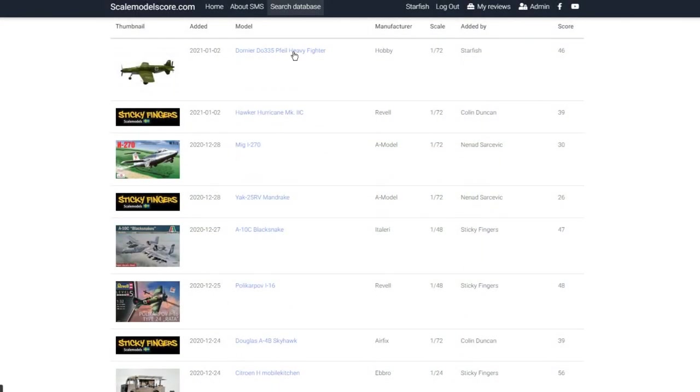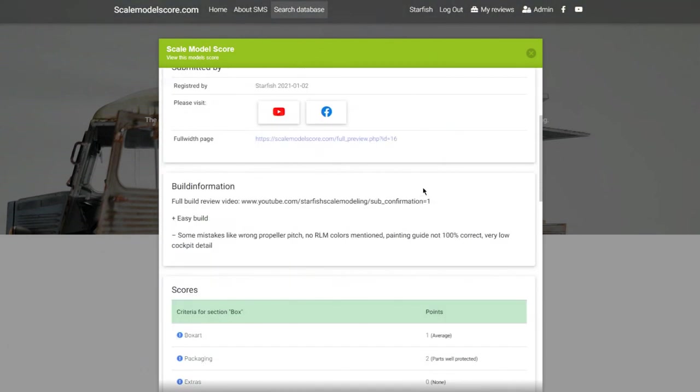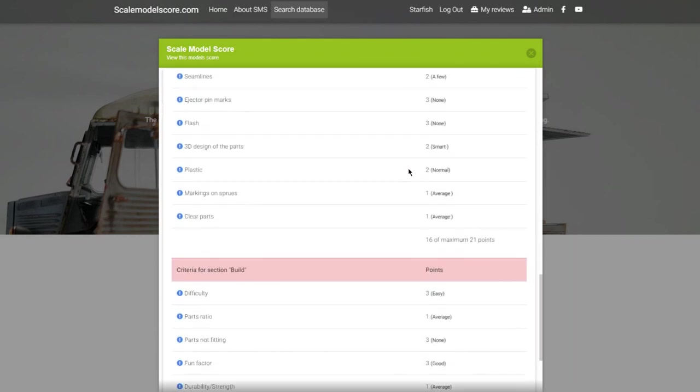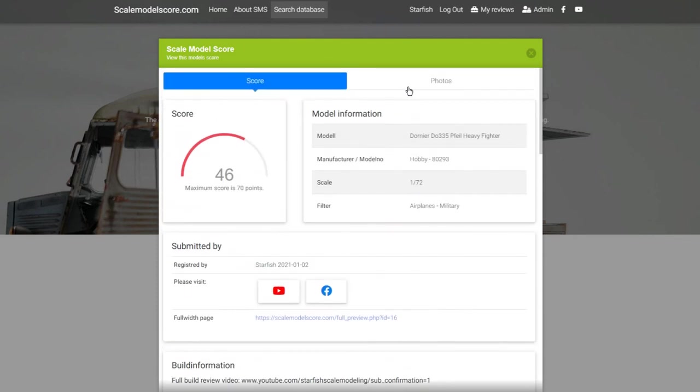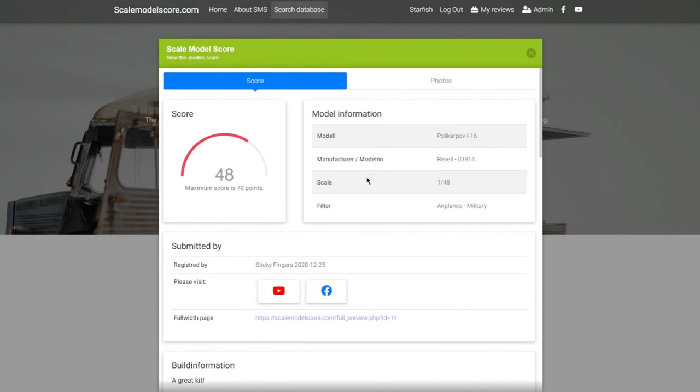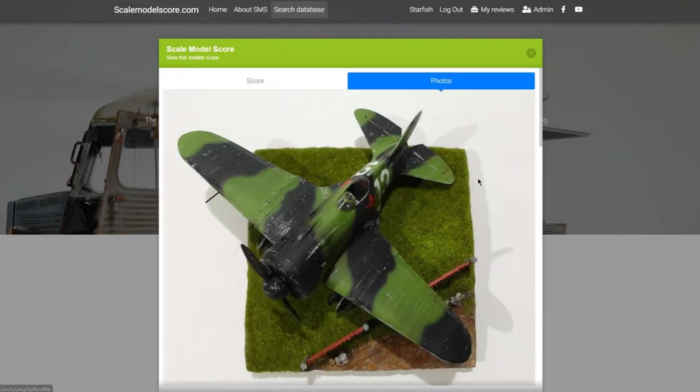I gave the Hobby Boss Do 335 a score of 46 out of 70 points on scalemodelscore.com which is a page that Sticky Fingers and I recently launched. As the name suggests it's a simple way to give your kit ratings and compare certain models with others. Check out the links in the description to see more details.